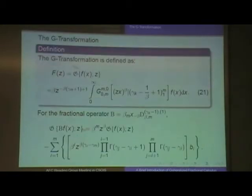Here's the definition. The capital G transform is defined in this way. You can see it here. It's still an infinite integral here, that's at zero. And the kernel here is a Meijer G function in this form, m, that's at zero zero, times a power law function and times fx here.